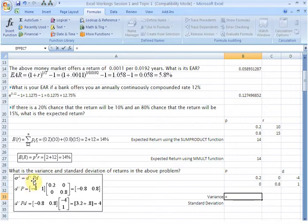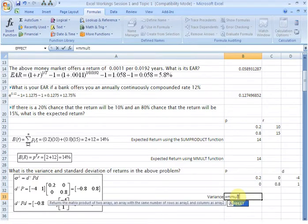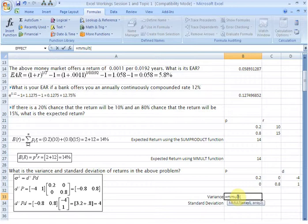is one vector, P matrix which is our probability diagonal matrix, and then again D vector. So let us do that. MMULT, start bracket, and then Excel is asking us to enter the arrays. So the first array is going to be the multiplication between D transpose and P. Let us do that multiplication. So